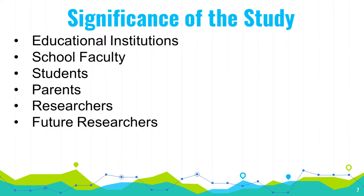Significance of the study. Educational institutions: The success of the project will benefit schools by having a systematic method of recording the attendance of students. The system will help them gather accurate and reliable records of attendance. School faculty: The system can help them have an accurate list of students who regularly attend school and easily monitor their students' presence. Students: They can record their attendance easily and conveniently, and the system will ensure that their attendance is accurately recorded. Parents: The system can help them monitor their students' attendance in school. The system will notify them by sending a short message about the arrival and departure of their students in school.